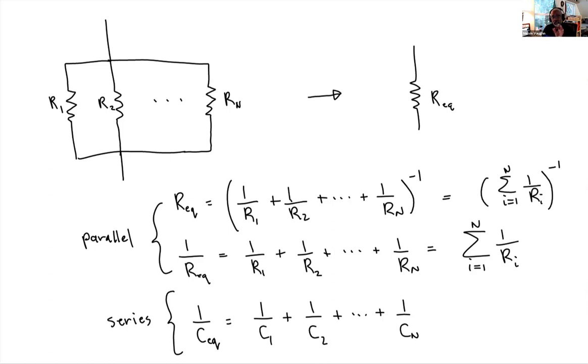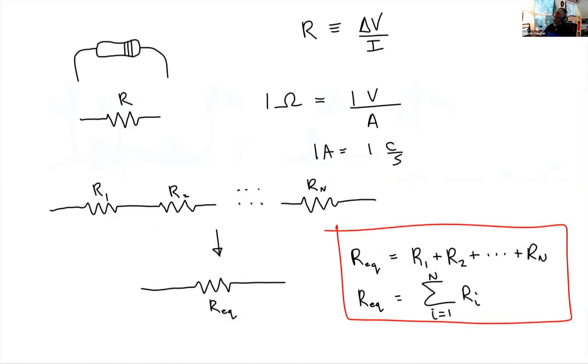I say this because if you could remember what the equivalent capacitance is for a series combination, you know that formula for the resistors is the same. It's just for a parallel combination. And then here, what we had was for resistors in series.